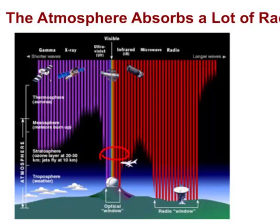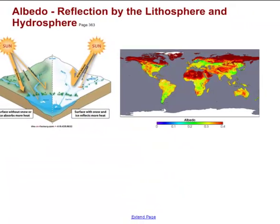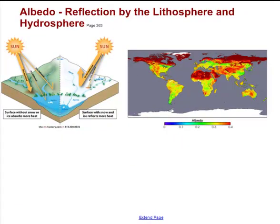Here again we have the visible light spectrum in the center, the short waves like gamma and X-rays on one side, and the long waves on the other. Notice that the atmosphere absorbs quite a lot of this radiation — and that's a good thing, because if we were exposed to gamma rays or X-rays we would fairly shortly develop cancer. People who get sunburned may tend to develop cancer later in life, so it's a good thing we have a thick atmosphere to protect us from that intense radiation.